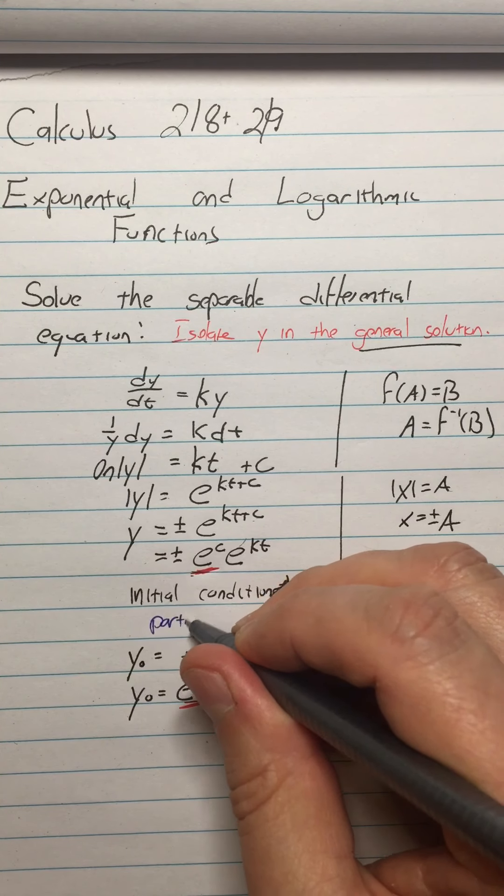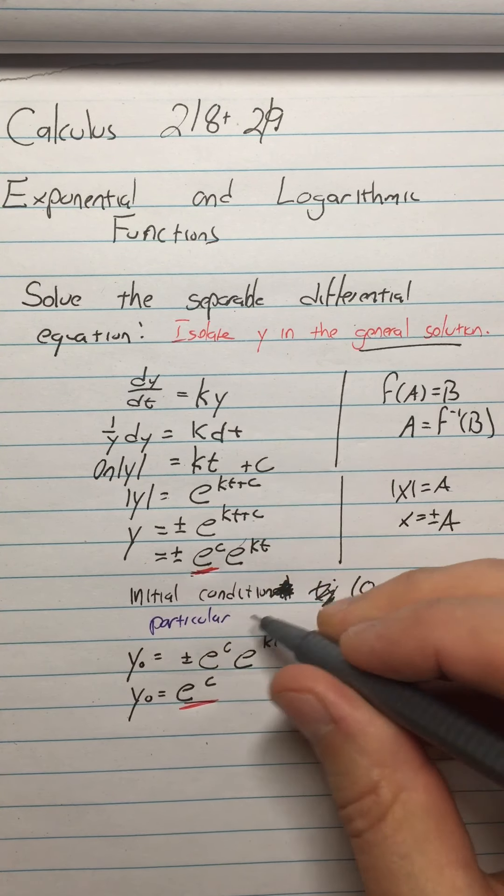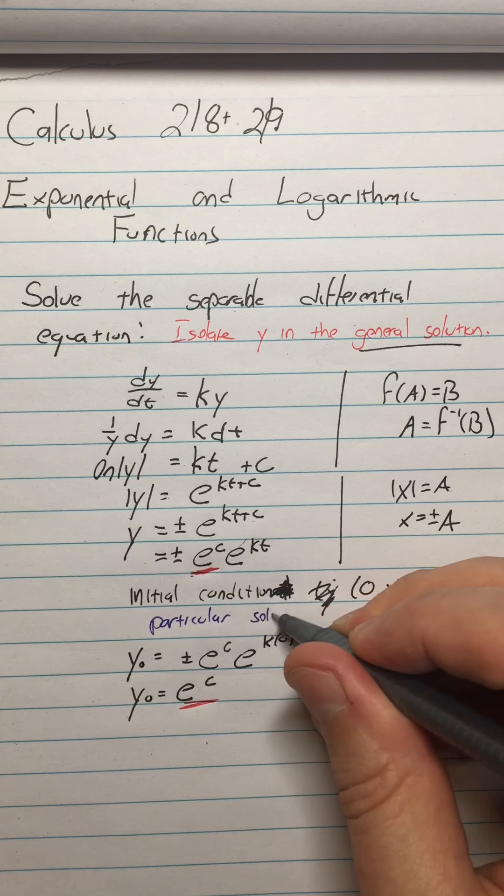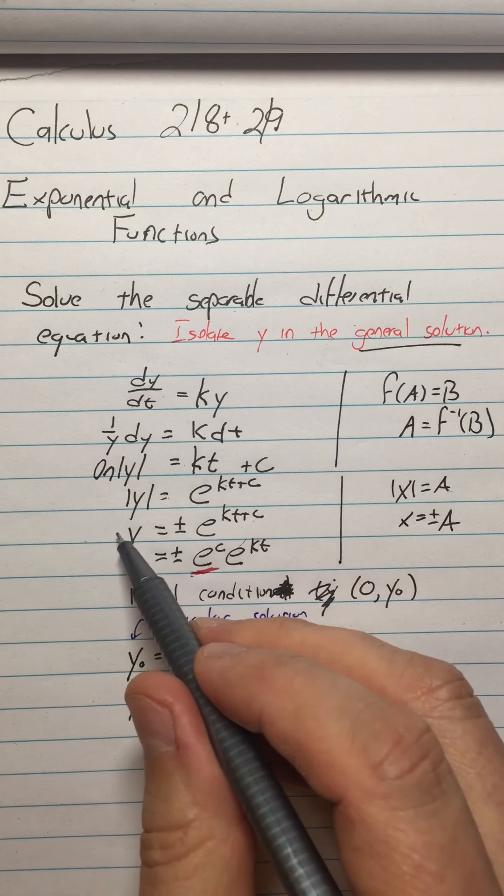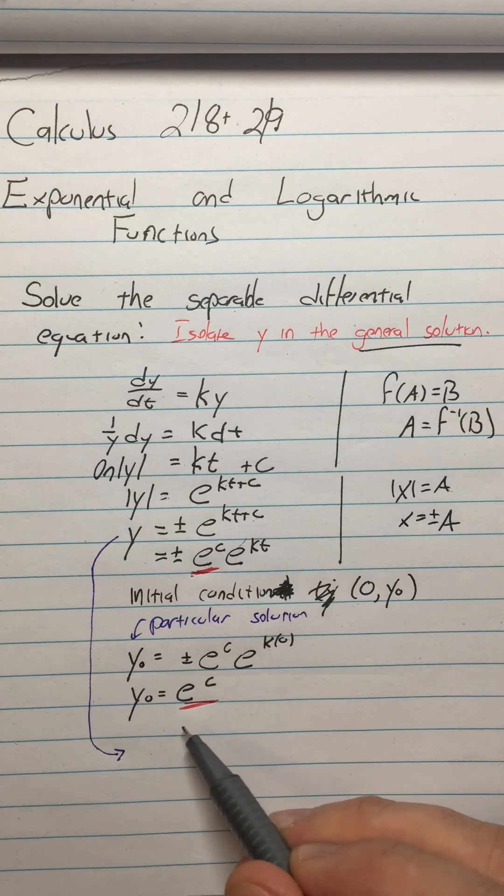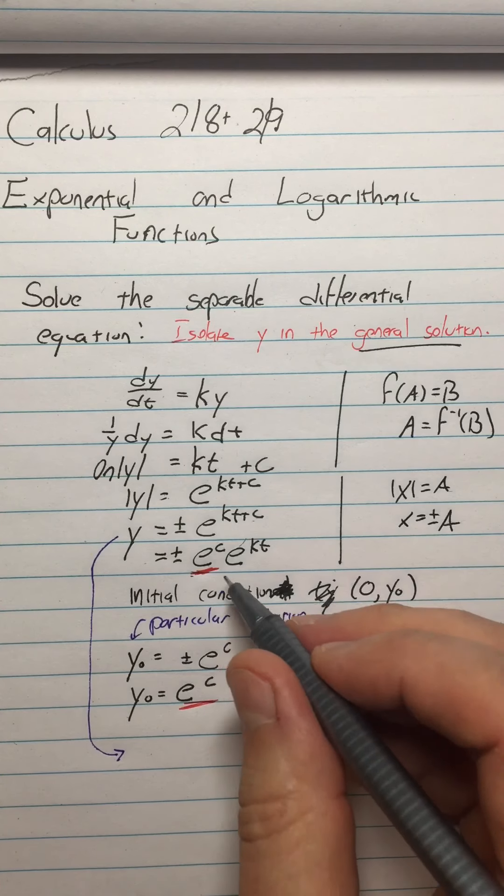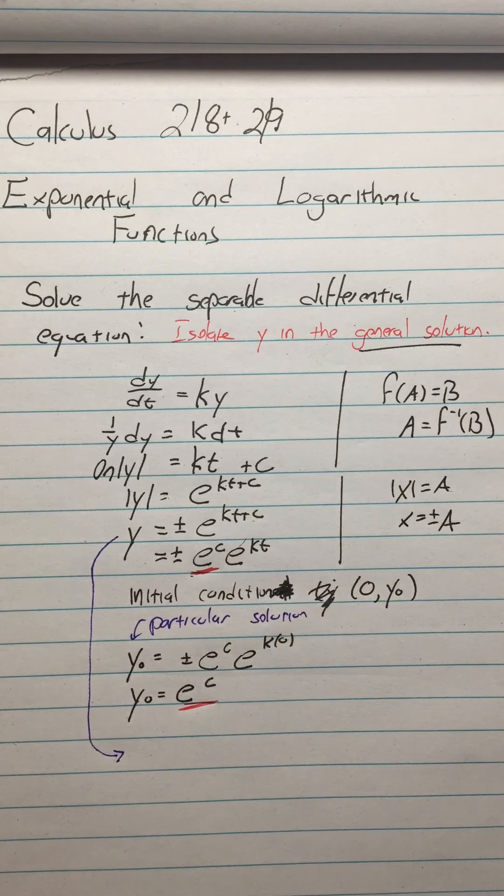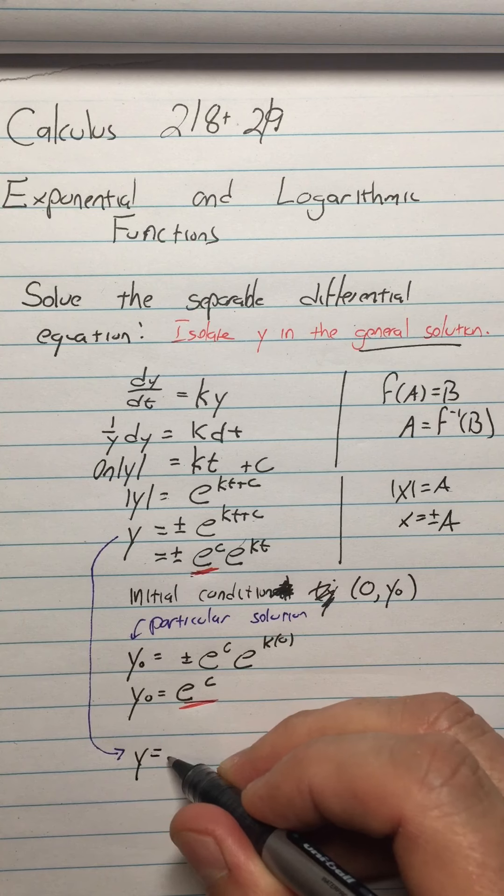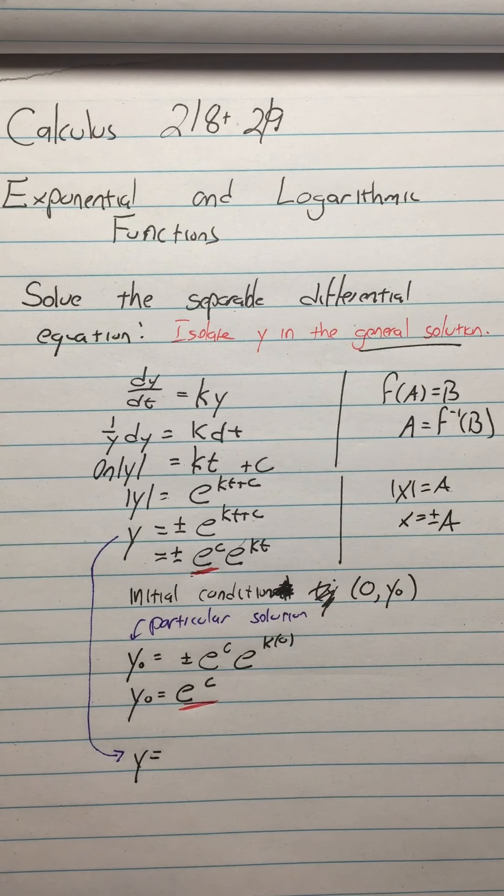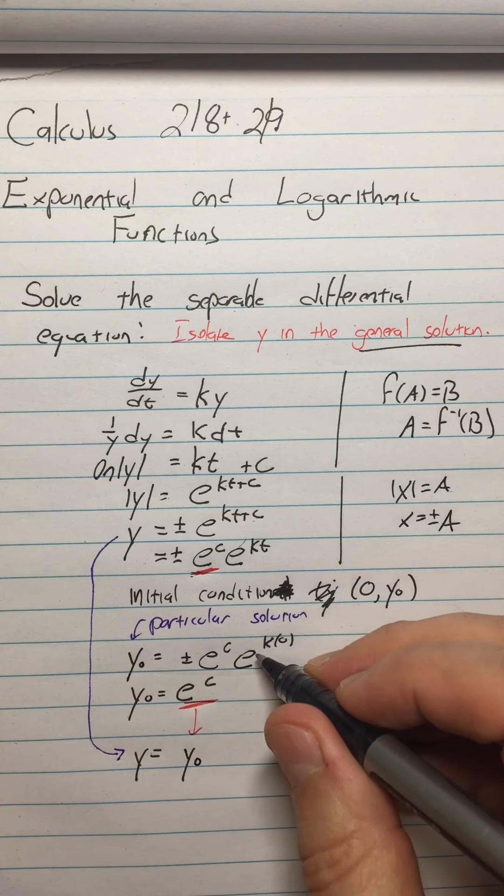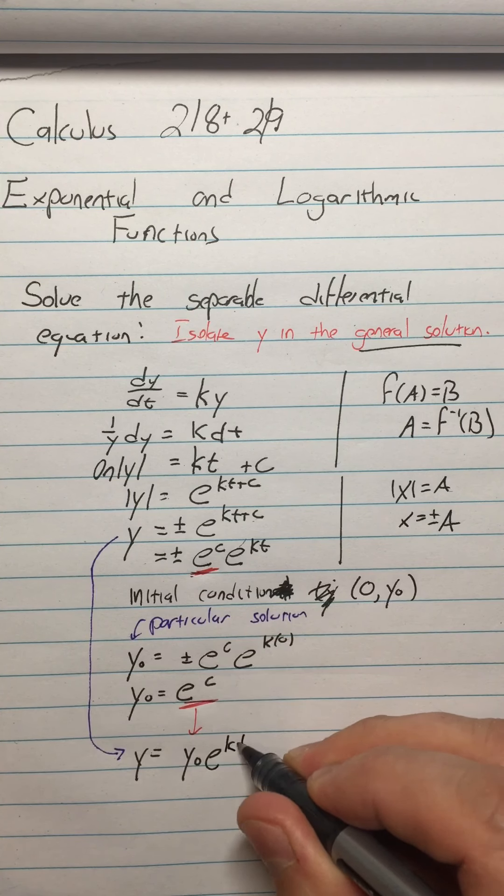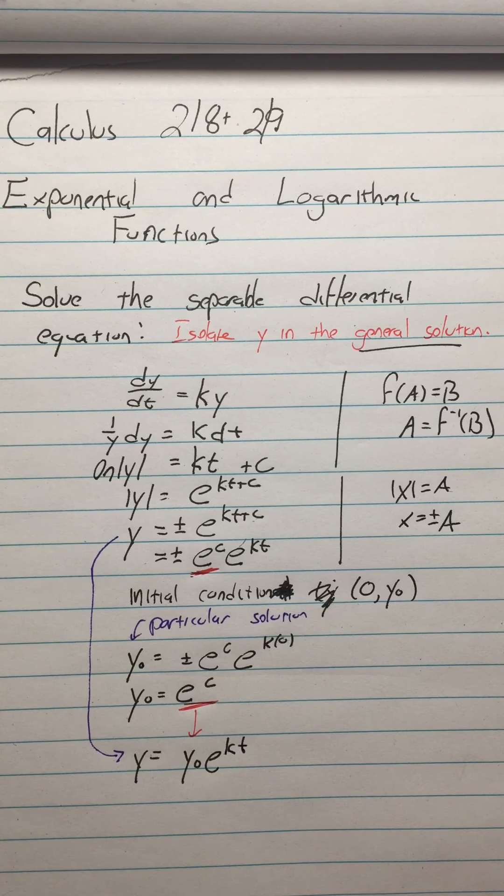So that means that I can get a particular solution with this given initial condition. So we're finding now a particular solution, although the Y zero is unspecified. Particular solution is what we're getting here. And then what I can do is take this function, this is my general solution, and plug in our value for E to the C. So I'm going to say Y equals our E to the C is Y zero, and then E to the KT.